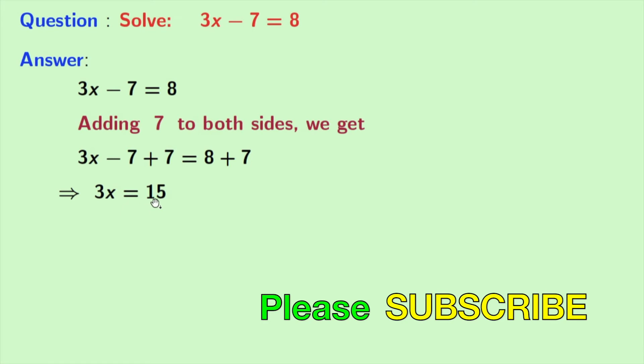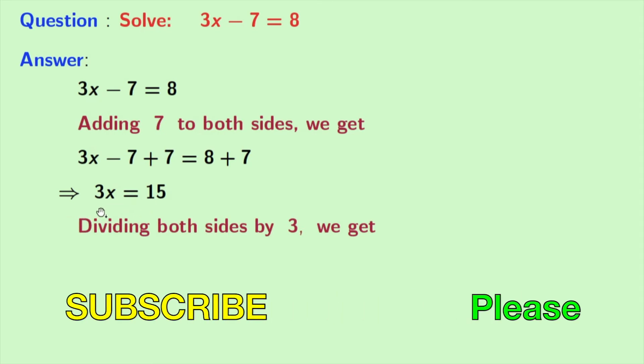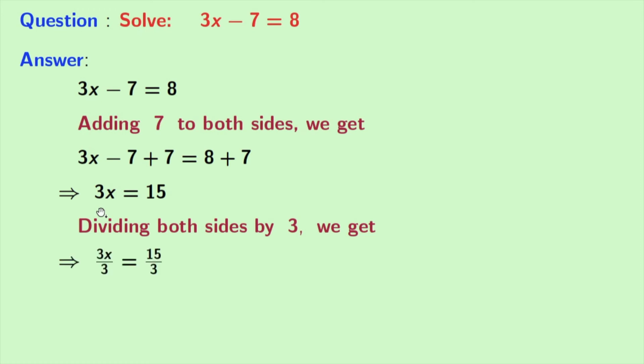Now we will divide both sides by 3, and doing that we have 3x by 3 equals 15 by 3.